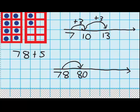80 is the tidy number just above 78. Right, to get to 80 I jumped 2. But I have to jump 5. I've only jumped 2, which means I've still got some more to jump up. I've got another 3 to jump up. 80 plus 3 is 83. So my answer is 83.